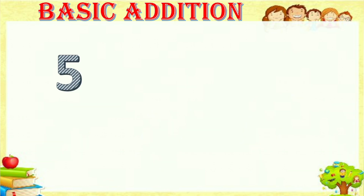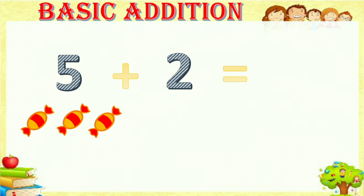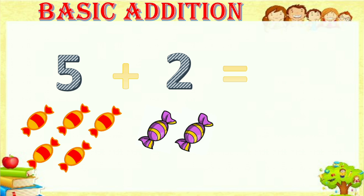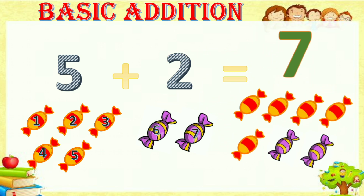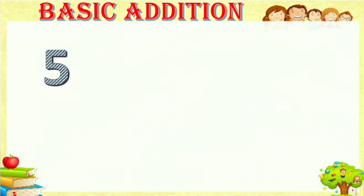Here the number is five plus two equals. For five we have one, two, three, four, five — five chocolates. And for two we have two chocolates. So totally we have seven.